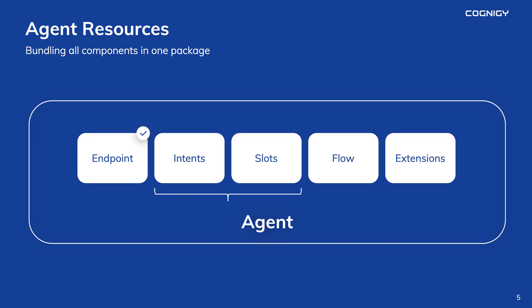When Cognigy receives an input from a user, it's processed by our industry-leading Language AI — the natural language understanding engine that takes a freeform user input and determines the user's intention. The NLU has two components: slots and intents.